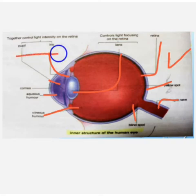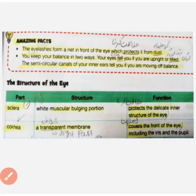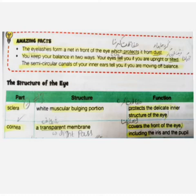The lens controls the light on the retina. The pupil and the iris control the intensity of light on the retina. The eyelashes form a net in the front of the eyes which protects them from dust. A question: what is the function of eyelashes?